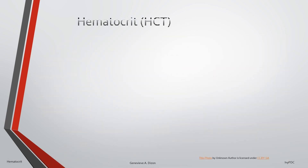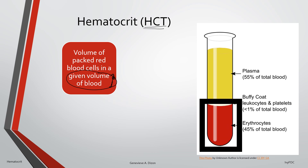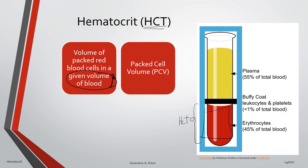Hematocrit, also abbreviated as HCT, is defined as the volume of packed red blood cells that occupies a given volume of blood — not the whole or total blood volume of the person. This packed red blood cell volume is our hematocrit. Another term for it is packed cell volume or PCV, and PCV and hematocrit may be used interchangeably.